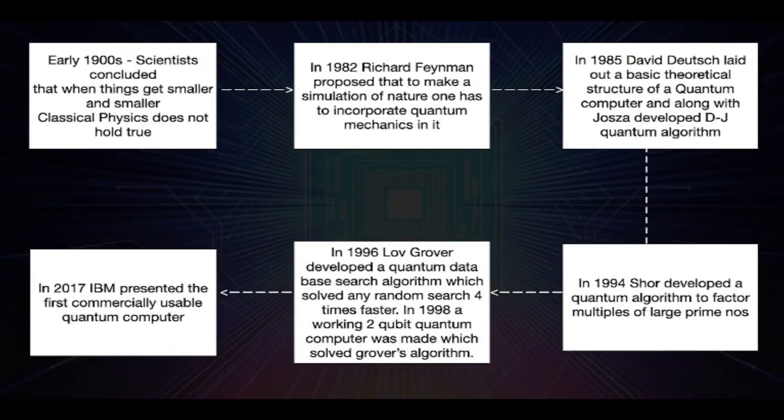In the early 1900s, scientists found that as things get smaller and smaller, classical physics does not hold. Planck stated that energy is quantized. Schrödinger said that until measured, an electron can be in many places at the same time. And Heisenberg stated that one can never know both the position and momentum of a particle with certainty.